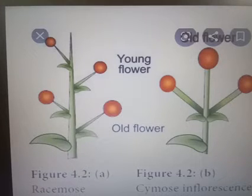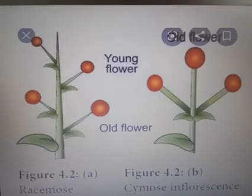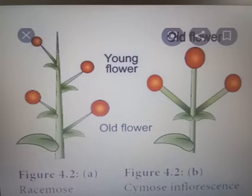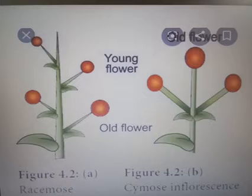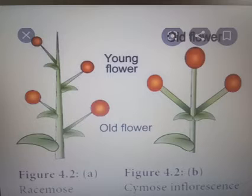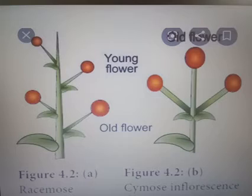Cymose inflorescence: here the main axis ends in a flower. The growth is however continued by one or more lateral buds arising from the node at which the terminal bud has turned into a flower. Therefore, the growth is termed as definite. In cymose inflorescence, the flowers are basipetal — older flowers are seen at the top and the younger flowers are placed below.